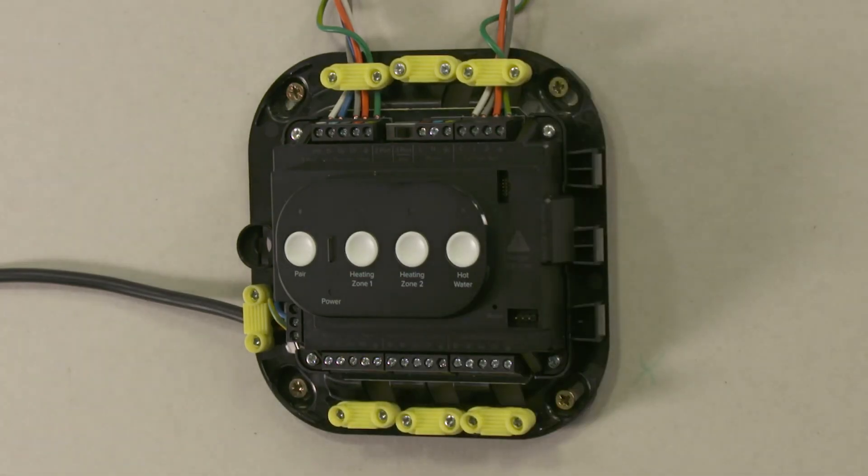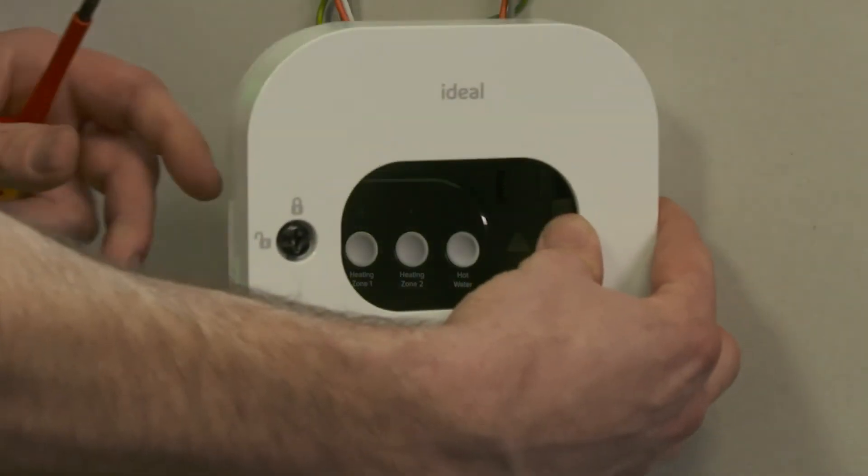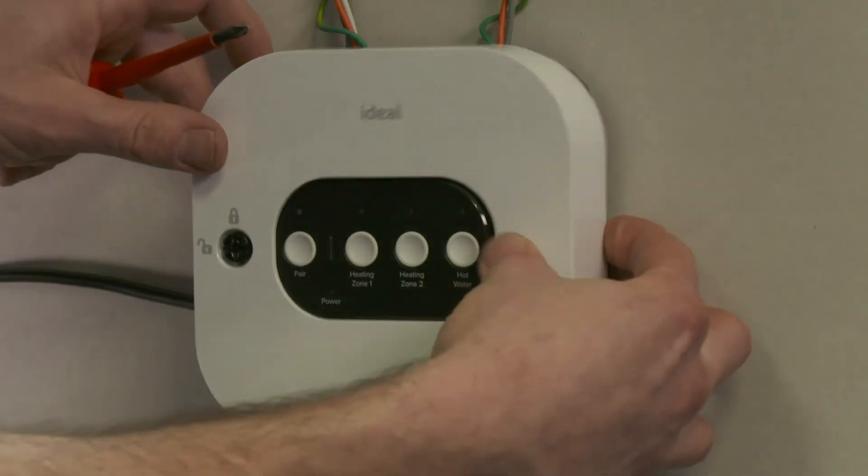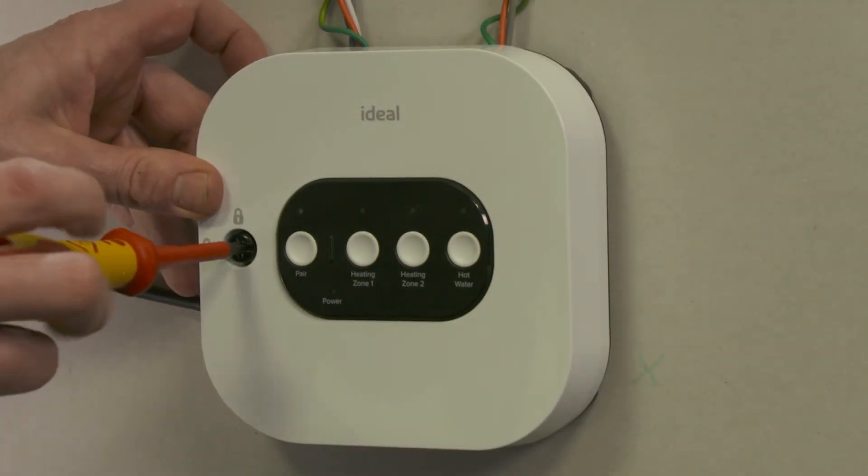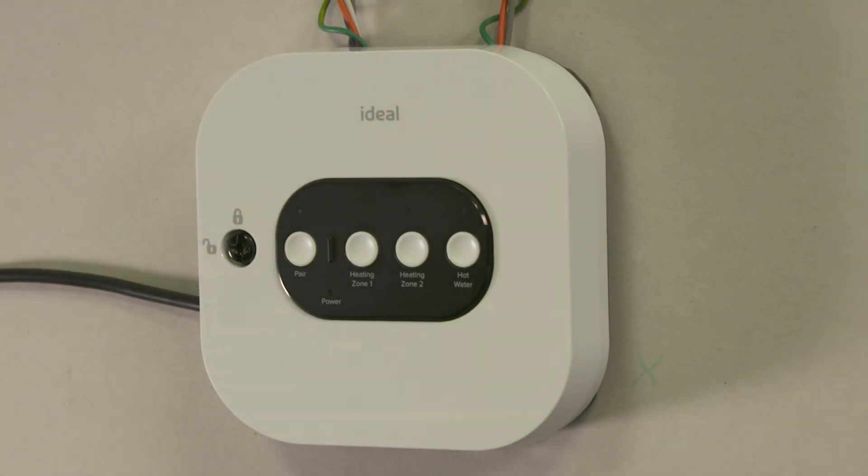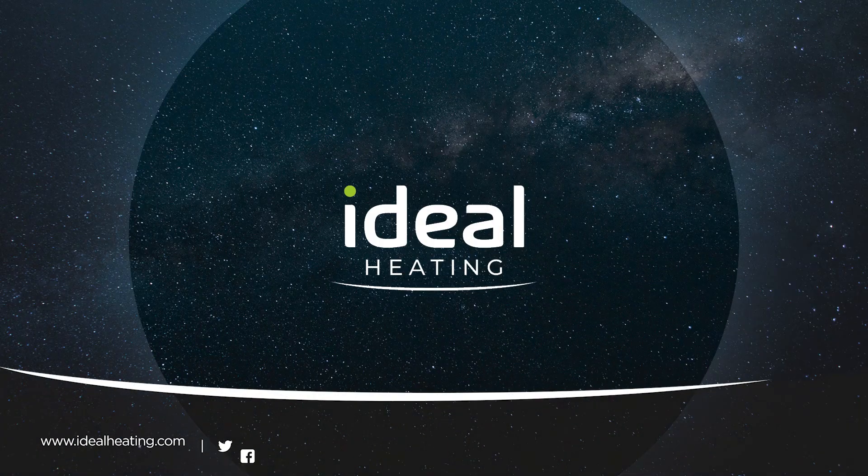Refit the front cover of the smart wiring center making sure it is locked in place. Lock the cover by turning the locking screw one quarter clockwise to the lock position.